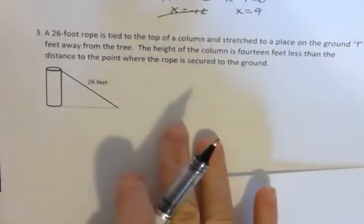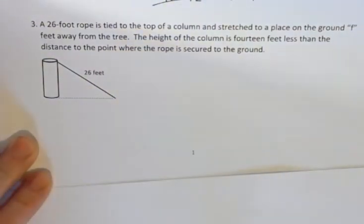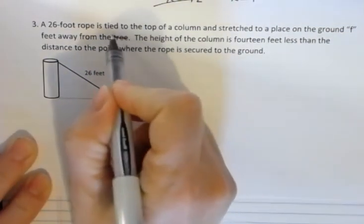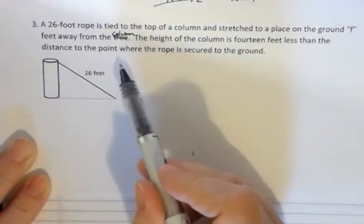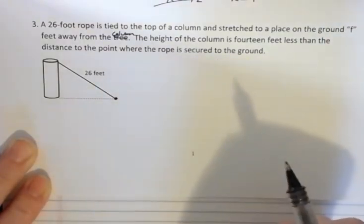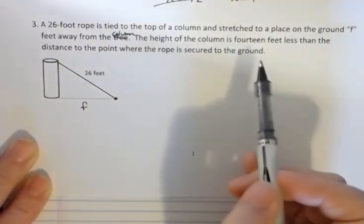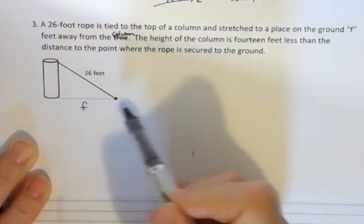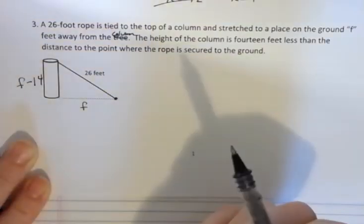And the last one, a 26 foot rope is tied to the top of a column and stretched to a place on the ground f feet away from the tree. Oh that should have been column. I changed that problem. The height of the column is 14 feet less than the distance to the point where the rope is secured to the ground. Here's the point where the rope is secured to the ground which we said is that we're going to call f. And the height of the column is 14 feet less than that distance. So the height of the column is f minus 14. So we agree with that.